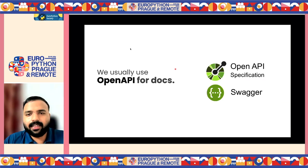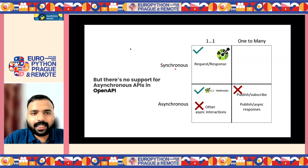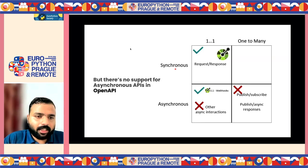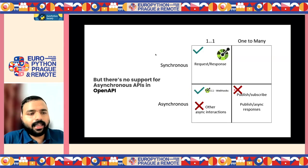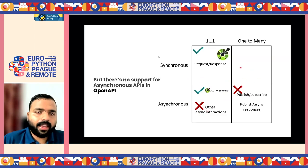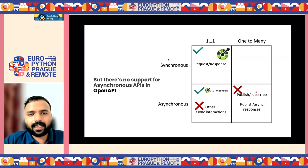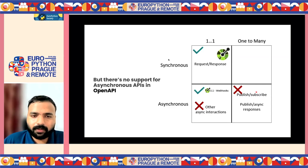OpenAPI, previously known as Swagger, is mainly intended for request-response — that is synchronous one-to-one messaging — and there's no support for asynchronous communication. Support for webhooks, which are basically an asynchronous system, was added in OpenAPI from version 3.1. All other types of asynchronous interactions are not there, and the one-to-many asynchronous interaction pattern mostly seen in event architectures — one publisher, many consumers — is not defined by the OpenAPI specification.